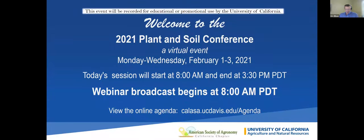On behalf of the California Chapter of the American Society of Agronomy, I'd like to welcome everyone to the 2021 California Plant and Soil Conference. My name is Eric Ellison, and I'm this year's Chapter President. This is my seventh year serving the board as an industry representative. I work for a startup company called Plant Response Incorporated, based in the Research Triangle Park in North Carolina.